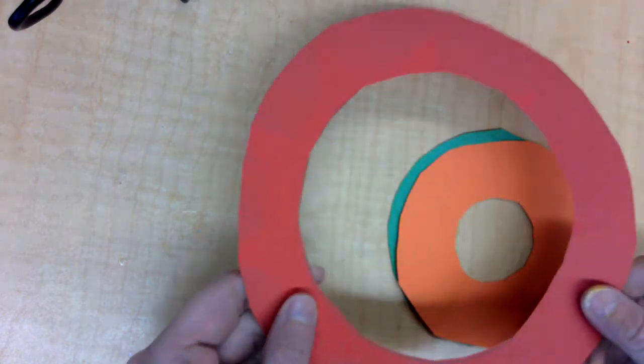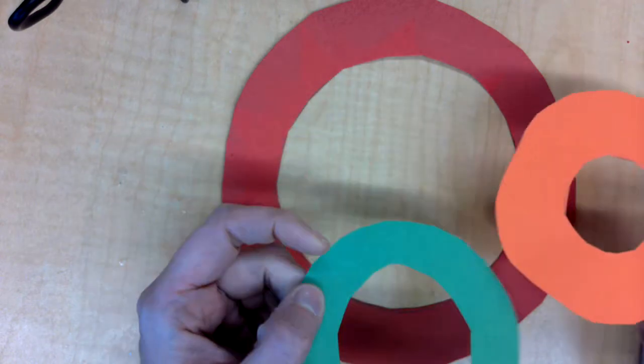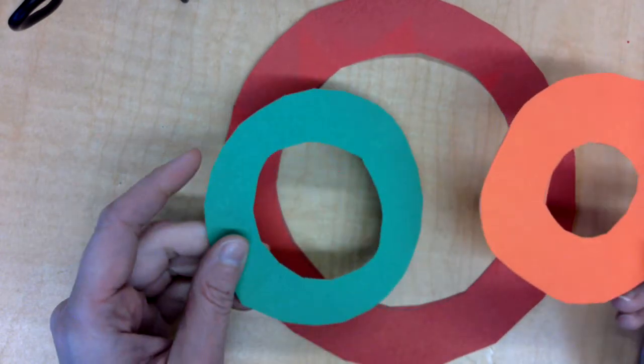Alright, so once you have your rings cut out, they should look something like this. If you use the template and then trace and just cut out your rings, they just have a variety of sizes, some small, some medium, some large.